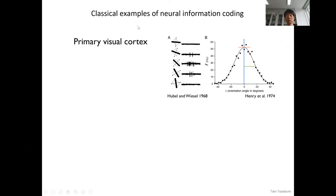Let me begin with the classical examples of neural information coding. The first example is from primary visual cortex. In the famous Nobel Prize-winning experiment by Hubel and Wiesel, they characterized how neurons in the visual cortex respond to an oriented bar on the screen. If the orientation is aligned to the preferred direction of a neuron, this neuron emits a lot of action potentials. But if the bar is tilted away from the preferred orientation, there is almost no response. You can characterize this neuron's response by plotting the firing rate — the number of action potentials emitted per second — as a function of the orientation of a bar.